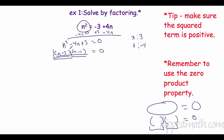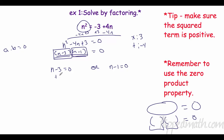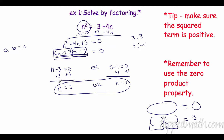Now I'm going to take each factor, because this could be 0. N minus 3 could equal 0, or n minus 1 equals 0 — a factor is anything that multiplies times something else. I have two factors because if I multiply two things and it equals 0, one of these two things has to be 0. So I'm going to add 3 on both sides: n could be 3. I'm going to add 1 on both sides: n could be 1. There are our two answers. If you wanted to, you could plug them in and check.